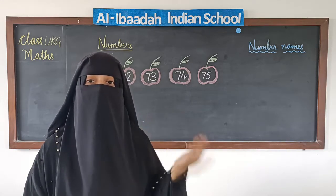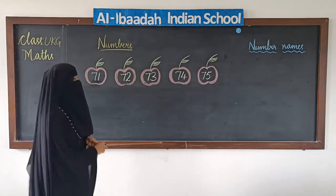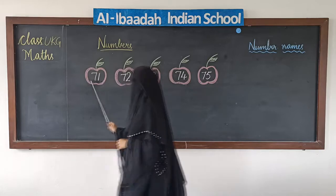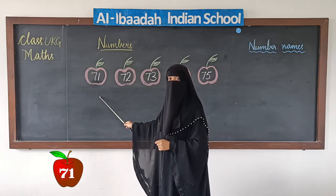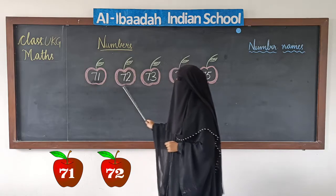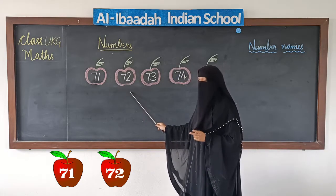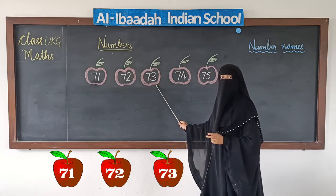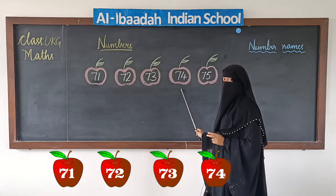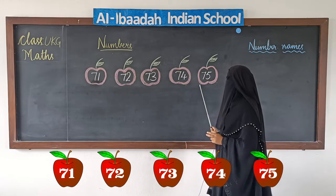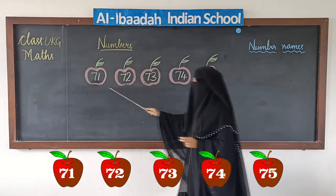Now let us learn after 70. After 70, the next number is 71, 72, 73, 74, 75.